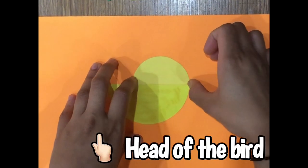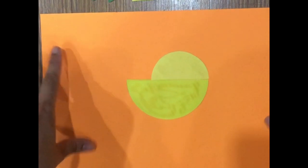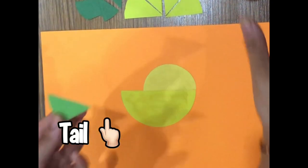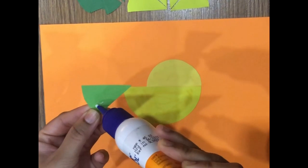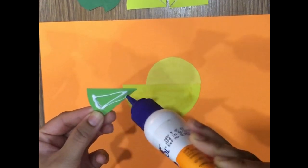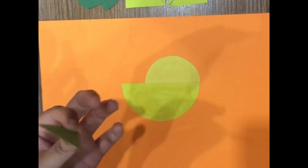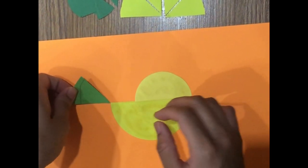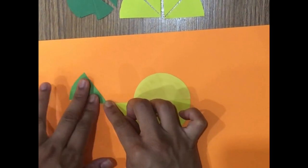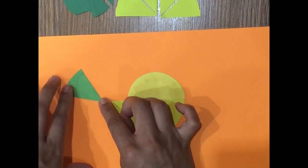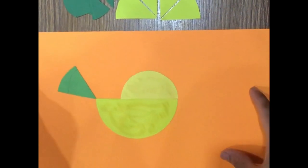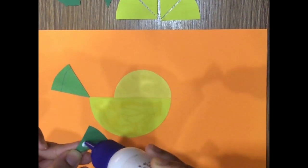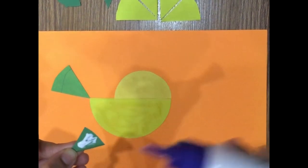Now we will be pasting the tail of the bird. We will use 1/8 of our circle and paste it at the tip of the semicircle, the bigger one. We will also use another smaller 1/8 cutting of a paper circle. Put some glue.